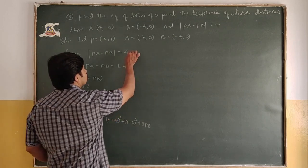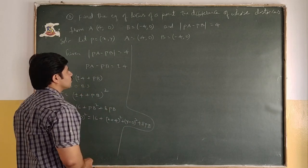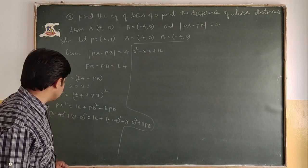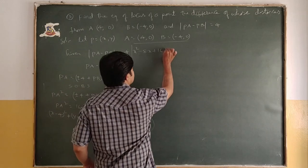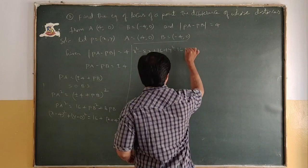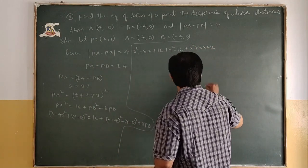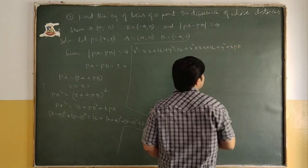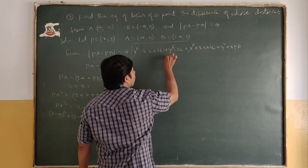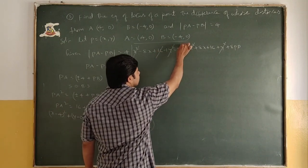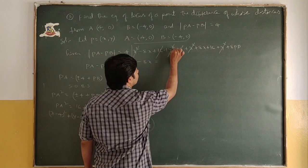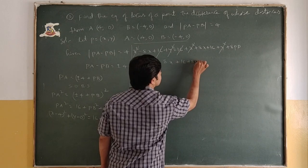Expanding (x-4)² = x² - 8x + 16 and (x+4)² = x² + 8x + 16. After cancelling x², y², and 16 from both sides: -8x = 8x ± 8·PB. So -8x - 8x = ±8·PB, giving -16x = ±8·PB.